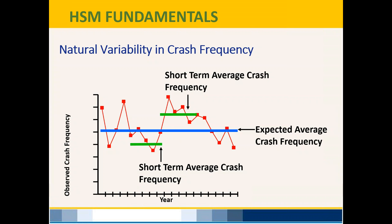A good example: a section of roadway in Ohio was identified for safety concerns and countermeasures were applied. Three years later, crashes had reduced — so someone asked what was done. The answer: nothing was actually done. They had been looking at a small snapshot of time. What they needed was a much more expansive look at crash data to figure out the expected average crash frequency.